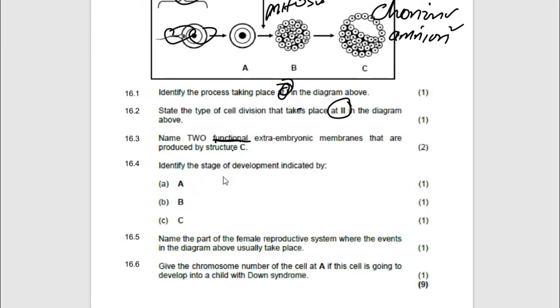Name the part of the female reproductive system where the events in the diagram above usually take place. Where do we find this? They occur in the fallopian tube because fertilization will take place in the fallopian tube. Fertilization will take place here and then these events will keep on moving until they reach here. Once they reach here, then implantation will take place on the walls of the endometrium. But all these events we are seeing, they are taking place from the ovary. They are moving. They take place along the fallopian tube.